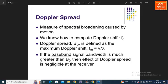The last parameter is Doppler spread. Doppler spread is the measure of spectral broadening caused by motion. We can compute the Doppler shift as fd. The Doppler spread Bd is defined as the maximum Doppler shift. The maximum frequency fm is calculated as V divided by lambda, where V is the velocity and lambda is the wavelength.